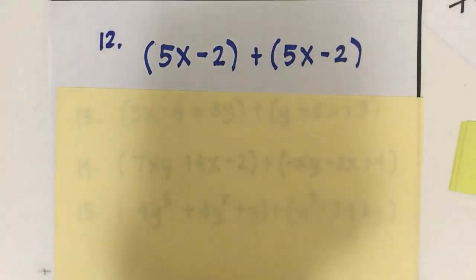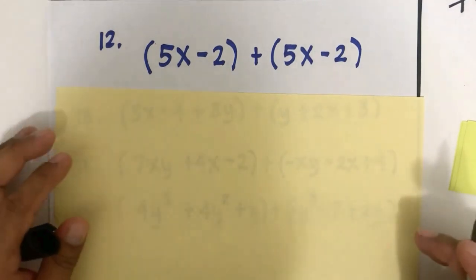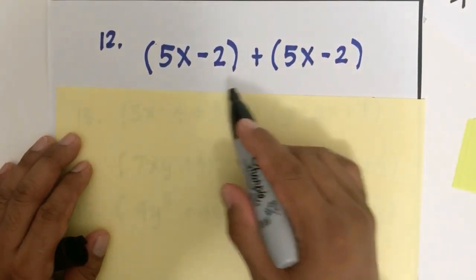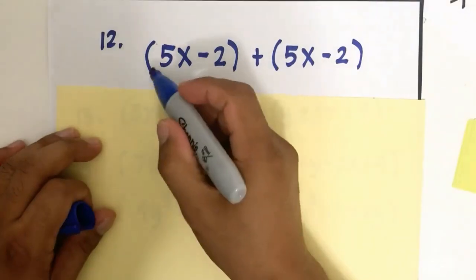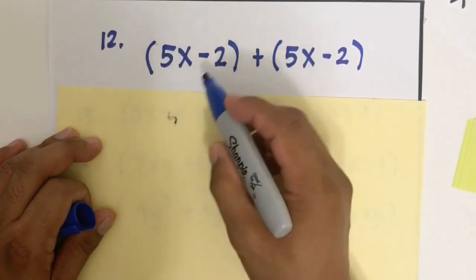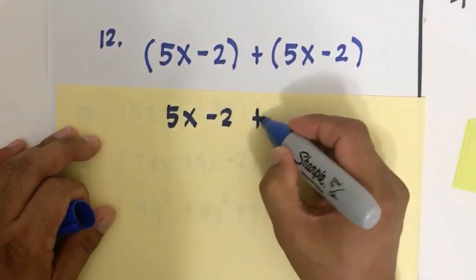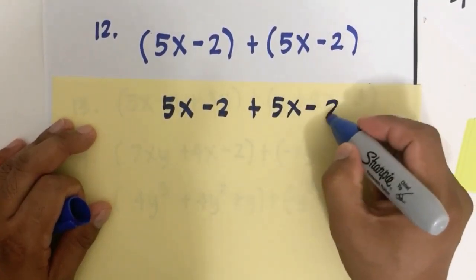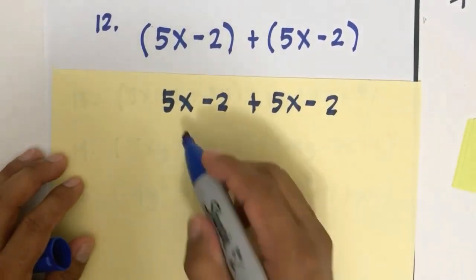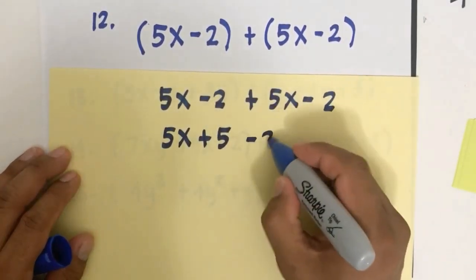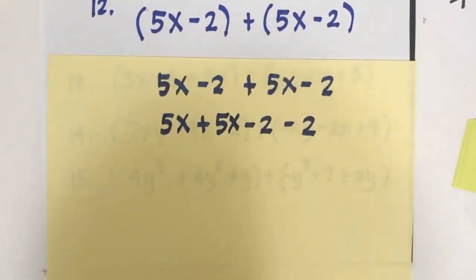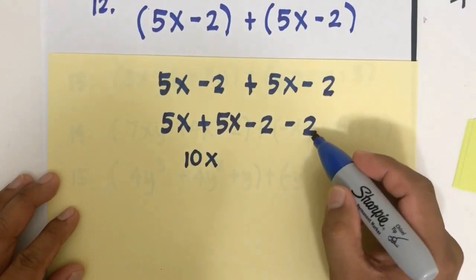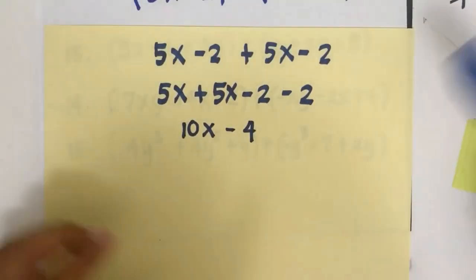The main rule: only similar variables with the same exponent can be added or subtracted — we call those like terms. Applying these rules: how do we add (5x minus 2) plus (5x minus 2)? Using the associative property, when a grouping symbol is preceded by a positive sign, we simply remove the parentheses: 5x minus 2 plus 5x minus 2.